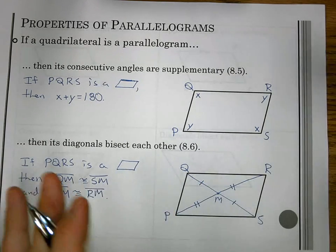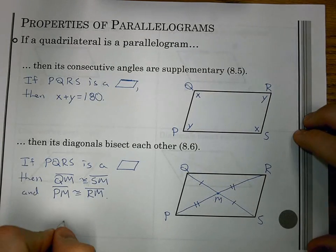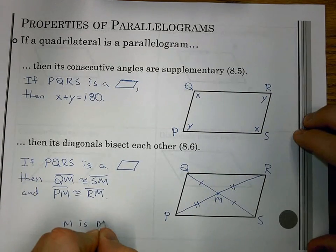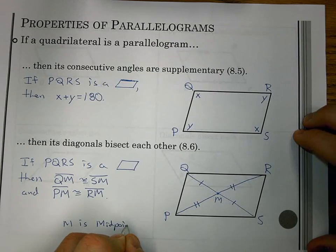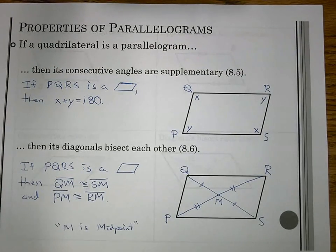So I've taken each diagonal and it breaks it in half. M we can think of as a midpoint to each diagonal. I can set those parts equal. So those are our five properties: opposite sides are parallel, opposite sides are congruent, opposite angles are congruent, consecutive angles are supplementary, and diagonals bisect each other.